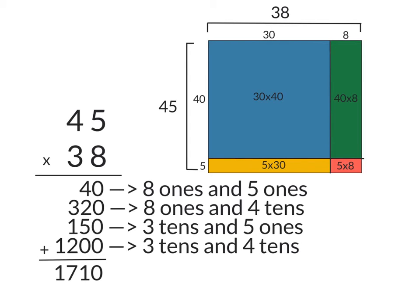Once again, this diagram over here represents our multiplication problem that we just did. The 8 1's and 5 1's right here are represented by the red square. The 8 1's and 4 10's are represented by the green square.